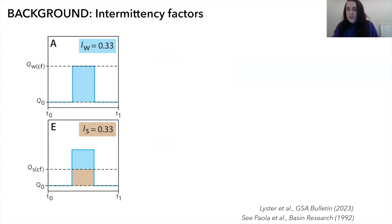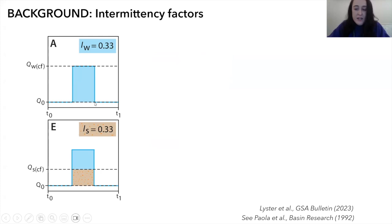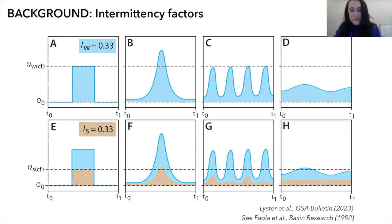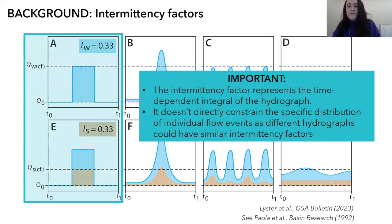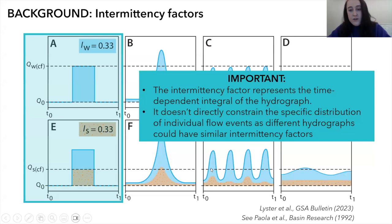The intermittency factor represents the time-dependent integral of the hydrograph, but it doesn't necessarily mean all the water is moved in one event — in reality flow is distributed over the course of the year and the hydrograph can have many different shapes. Similarly, it's very unlikely that a river moves its entire annual sediment budget in 0.33 of the year. The intermittency factor is a starting point: it doesn't tell us the specific distribution of individual flow events, since many different hydrographs could produce similar intermittency factors, but it lets us bridge mean and instantaneous flow conditions.